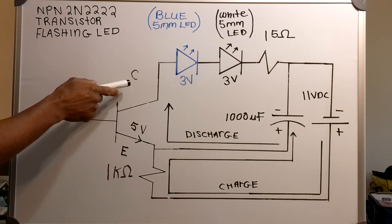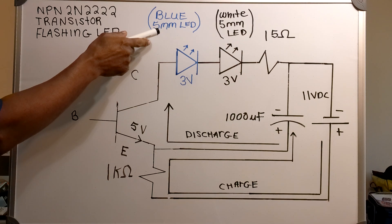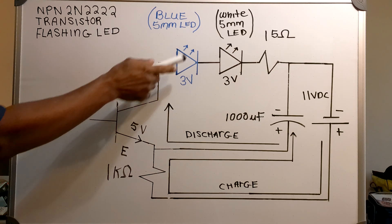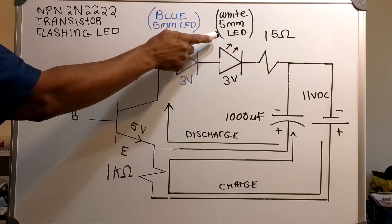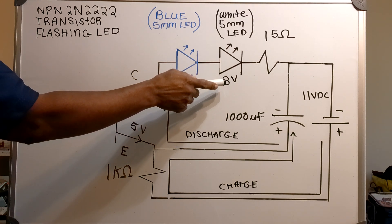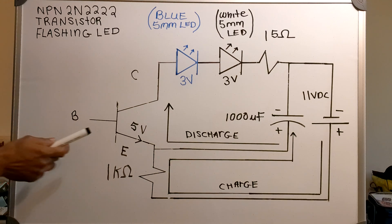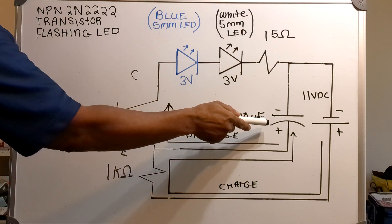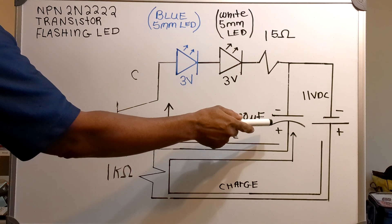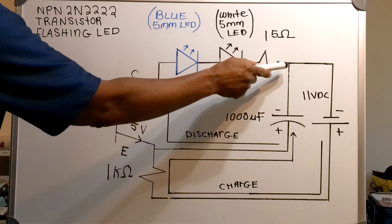On the collector side I have a blue 5mm LED rated at 3V, a white 5mm LED rated at 3V, and a 15 ohm resistor. I also have a 1000 microfarad capacitor going from the emitter across the collector.